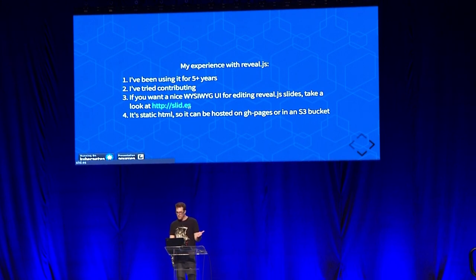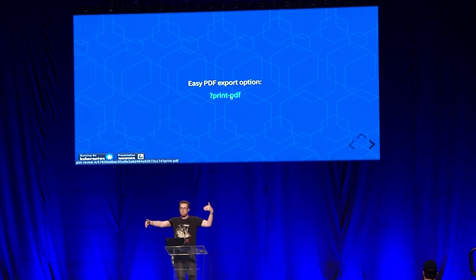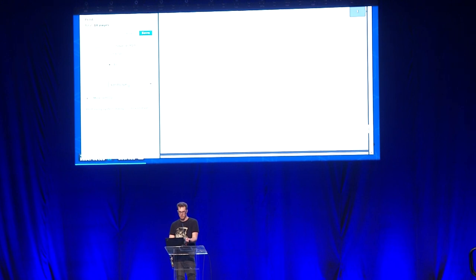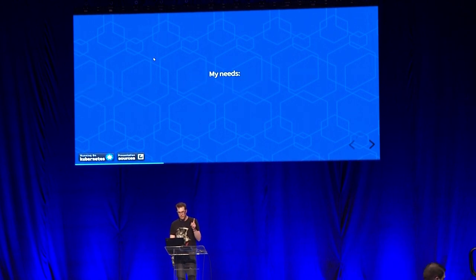But Reveal.js is static HTML, so anyone can host it really easily on GitHub Pages or in an S3 bucket. It also has a really nice PDF export option. If you add this query to the page, it will step through all the fragment transitions and try to show the final version of each of your slides. Then you can do Control+P, set it to landscape mode, say you don't want any margins, print the background graphics, and just print to file. So you have a really nice set of features here for working in HTML, all in open source — except for the editor — which is one thing I've wanted to expand on.